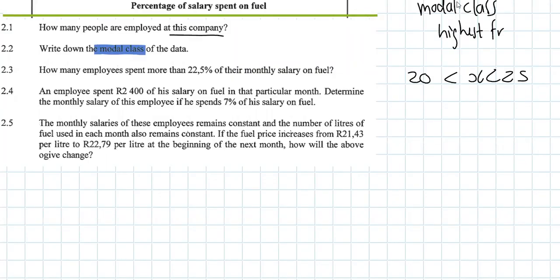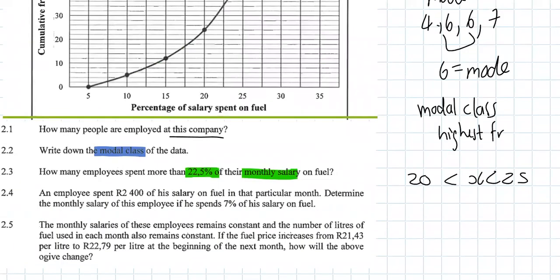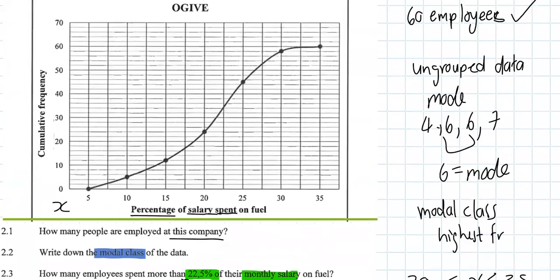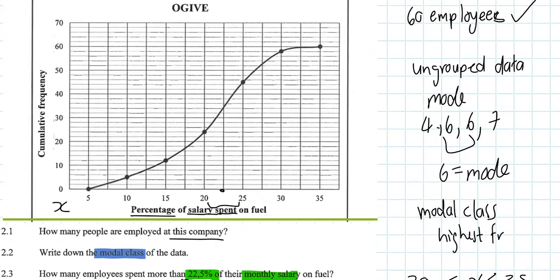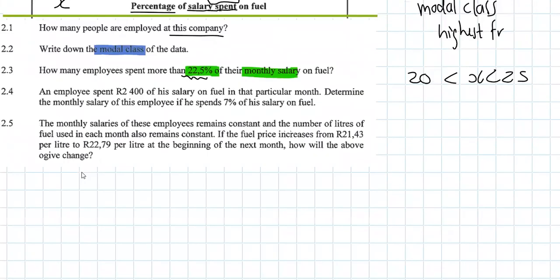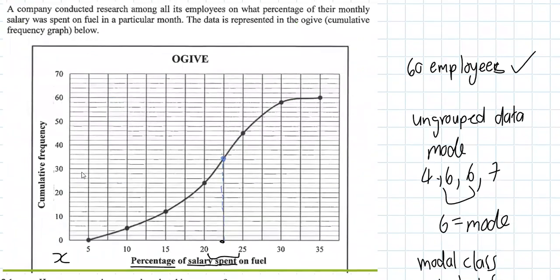Number 2.3: How many employees spent more than 22.5% of their monthly salary on fuel? So you have to find where 22.5 is - it's between 20 and 25, so halfway is 22.5. We can just go up to our line, and then it asks for employees, so we want to go to our cumulative frequency. Our cumulative frequency gets us to 34.